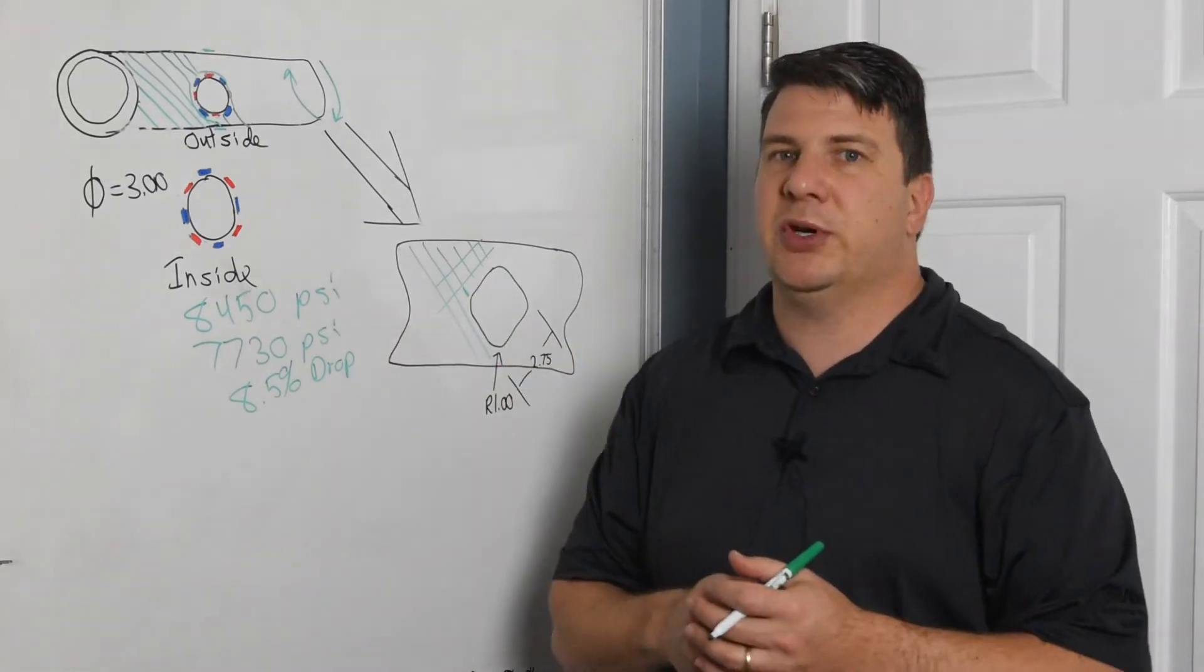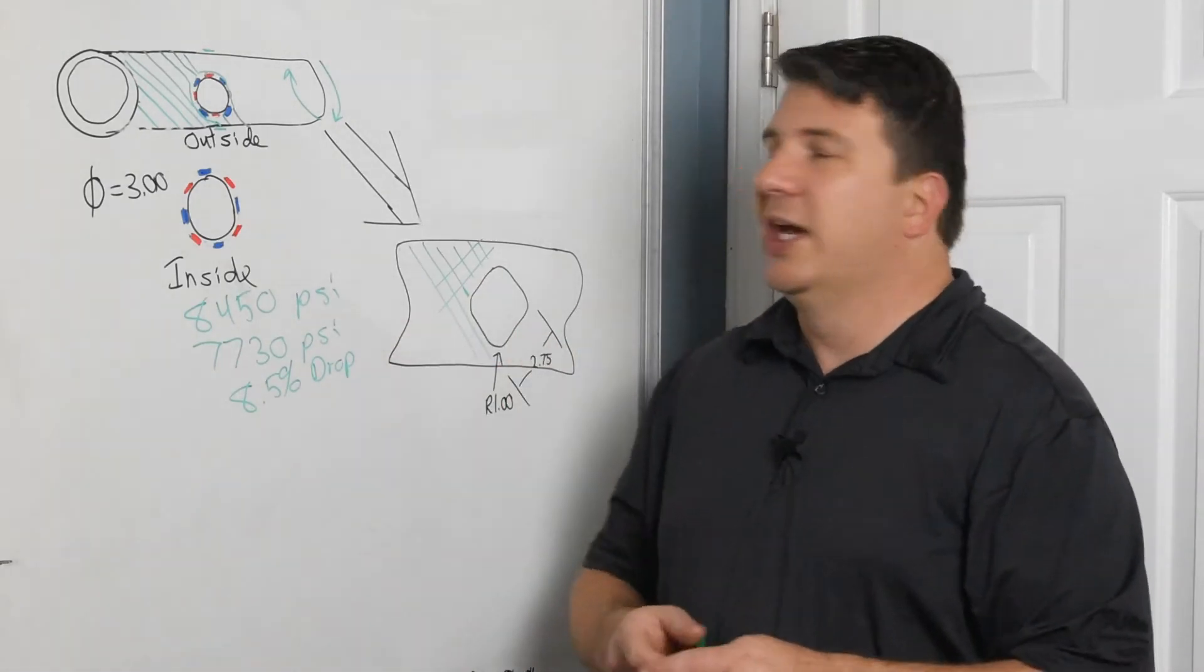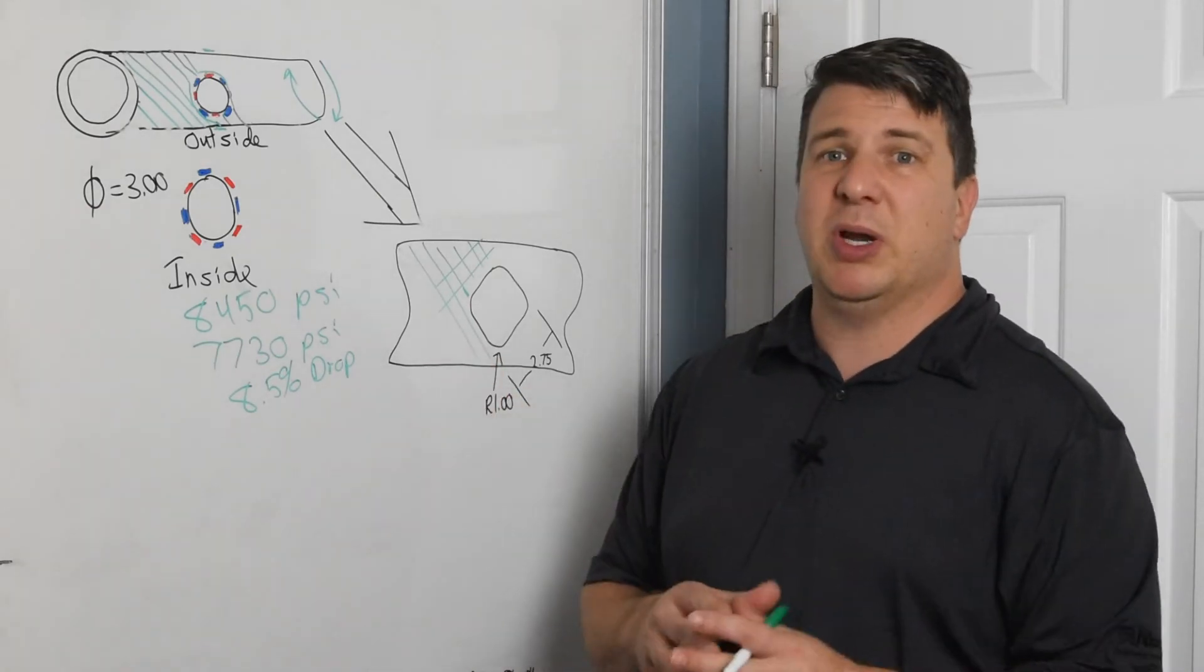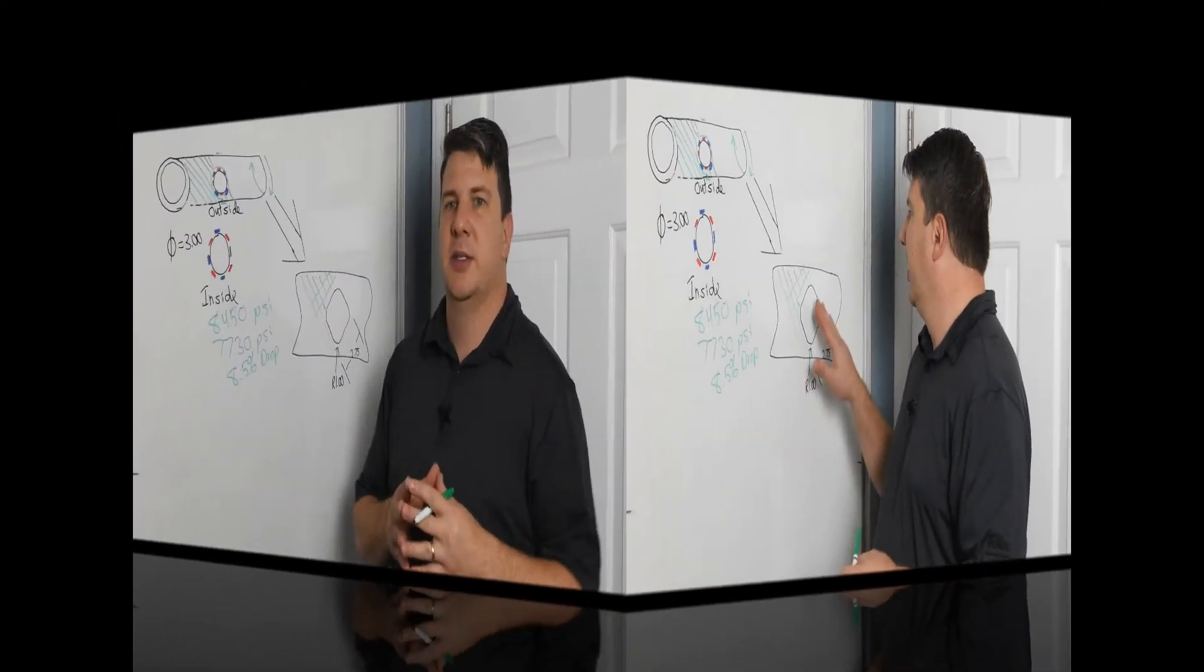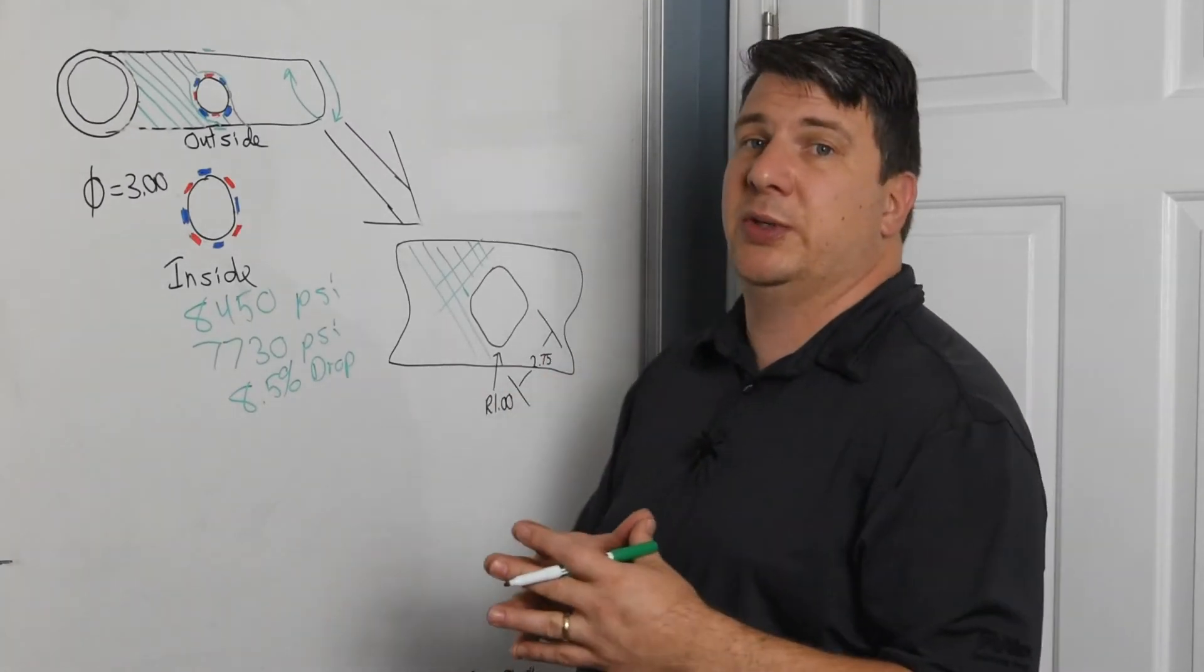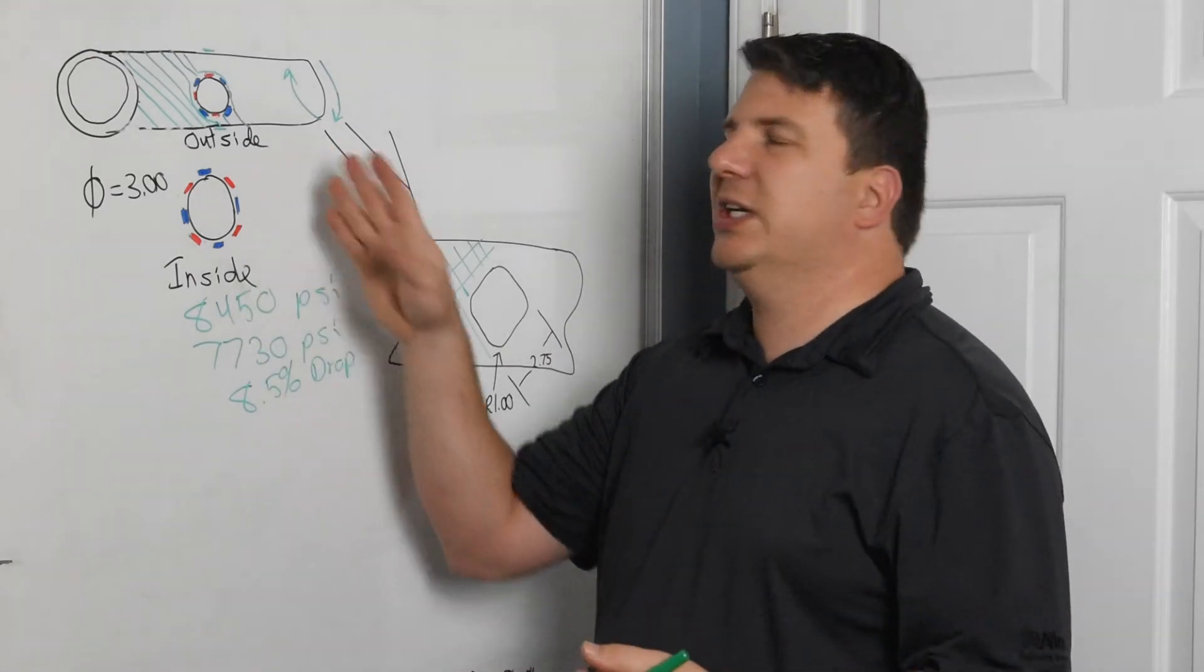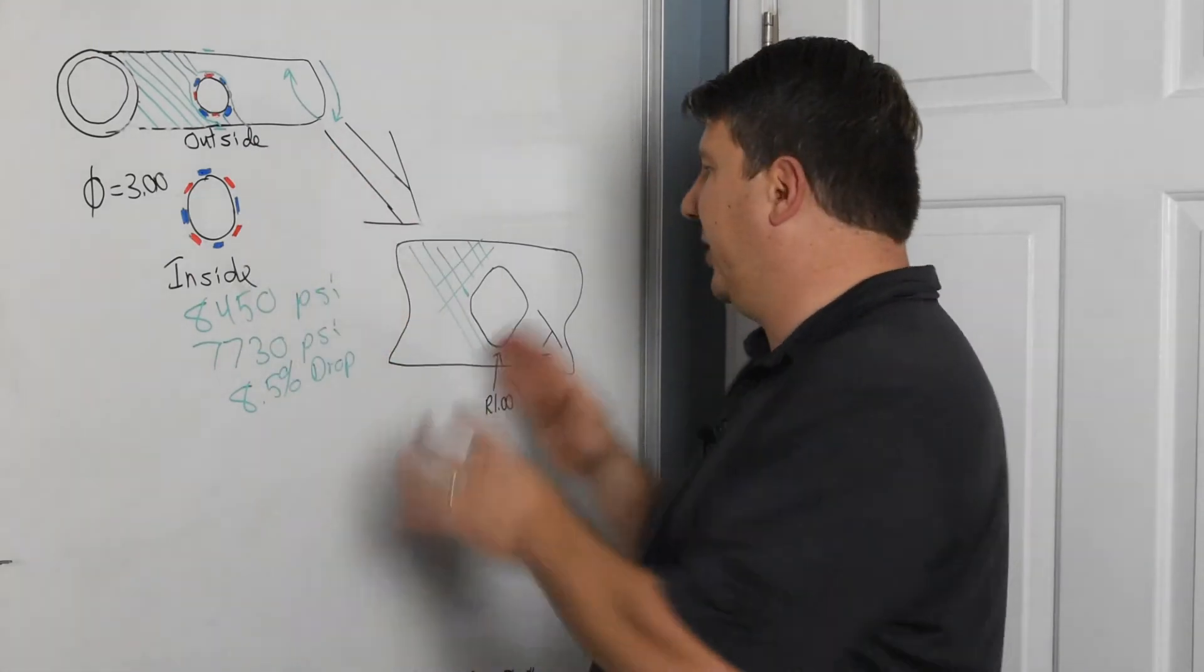That's a pretty big drop for just changing the shape of this and keeping about the same amount of area. I mean that's really good return, almost 10%. And depending on how thick your tube is and how much your stress is, you can probably drop even more.